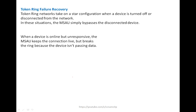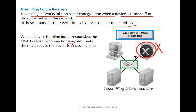Token Ring failure recovery: Token Ring networks take on a star configuration when a device is turned off or disconnected. In this situation, the MSAU simply bypasses the disconnected device. When a device is online but unresponsive, the MSAU keeps the connection live but breaks the ring because the device isn't passing data. In that scenario, the MSAU device will bypass that traffic or treat the node as disconnected.